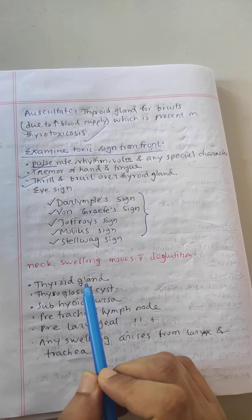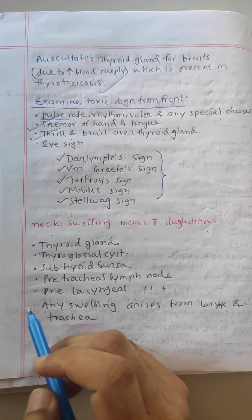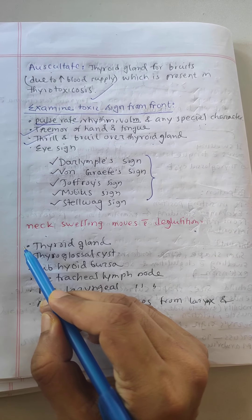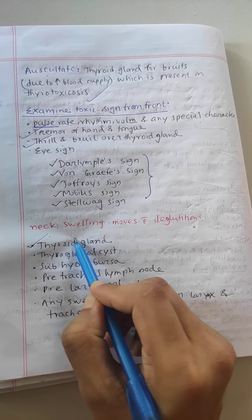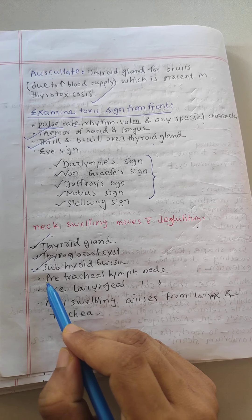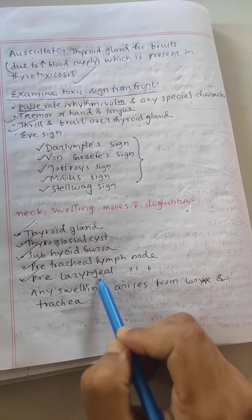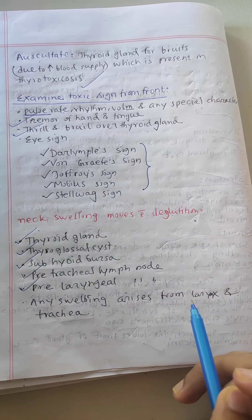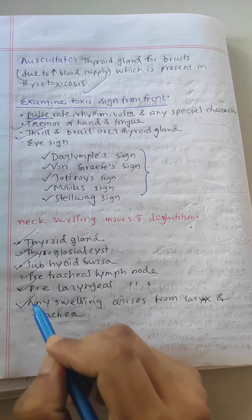Our next question is what neck swelling moves with deglutition. The thyroid gland moves with deglutition, thyroglossal cyst, subthyroid bursa, pretracheal lymph node, prelaryngeal lymph node, and any swelling arising from the larynx and trachea.